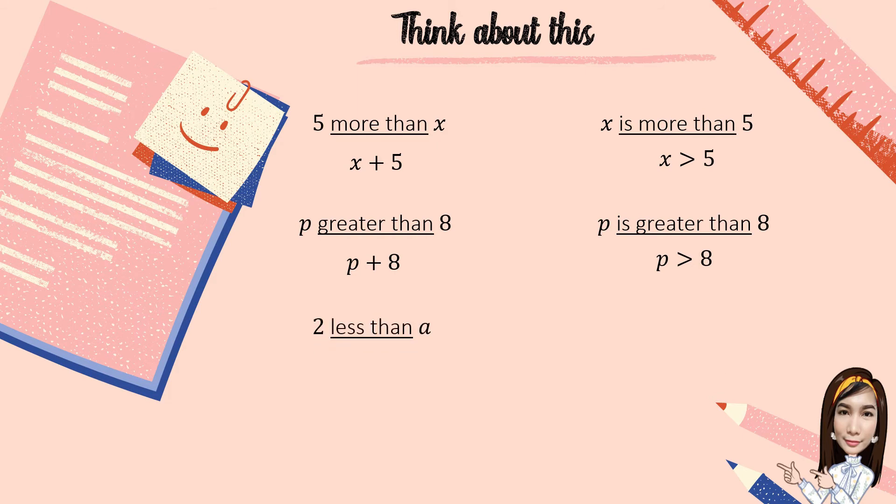2 less than A. A is less than 2. 2 less than A can be written as A minus 2. A is less than 2 can be written using the inequality symbol.